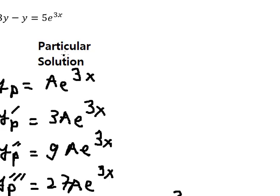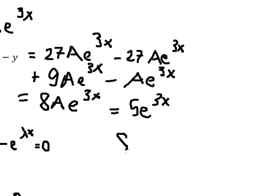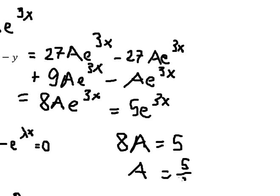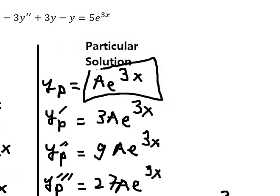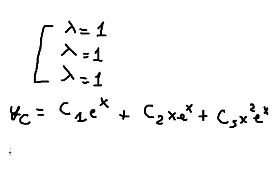We know this equals 5 e^(3x), so we just compare coefficients: 8A equals 5. Dividing both sides by 8, we get A equals 5 over 8. Substituting back, yb equals 5/8 e^(3x).